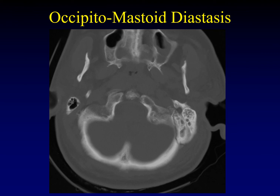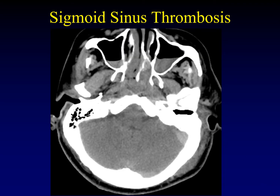Sometimes temporal bone fractures extend more inferiorly into the suture lines, causing diastasis of the lower skull base sutures. In particular, the occipitomastoid suture — running just medial to the most inferior mastoid air cells — can become diastased. You can imagine the risk this poses to the sigmoid sinus. Here's an example of sigmoid sinus thrombosis. Even on unenhanced scans, particularly when fractures violate the sigmoid plate — the thin bone covering the sigmoid sinus — we should be looking for this. The thrombus should be denser than the surrounding intracranial contents, so a CT venogram isn't necessarily required.